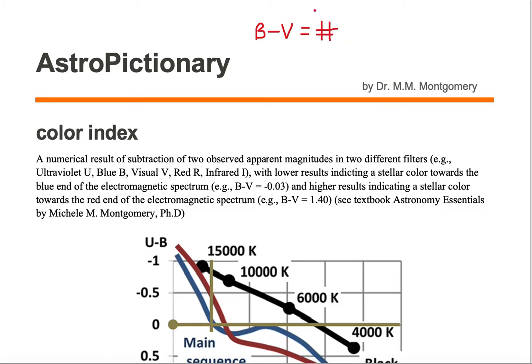That number is what's called the index of the color index. So now you know where the index part comes from. It's the numerical value result you get from subtraction of the two different filters.